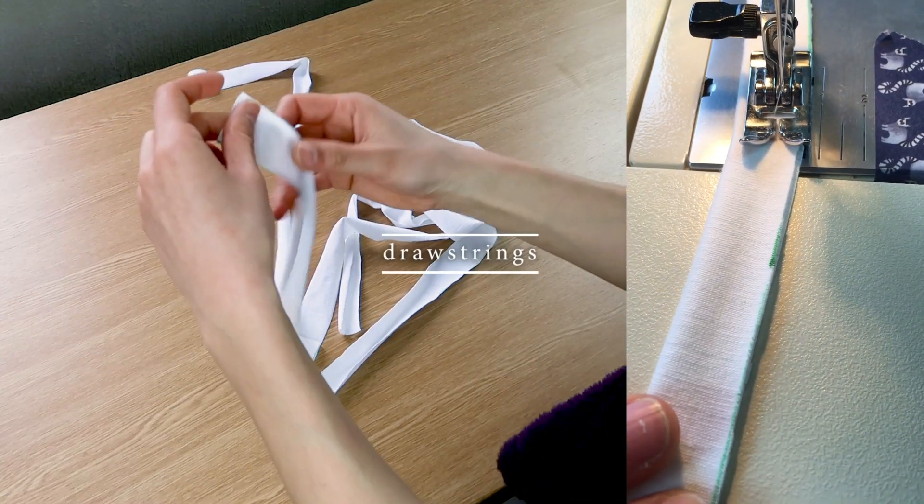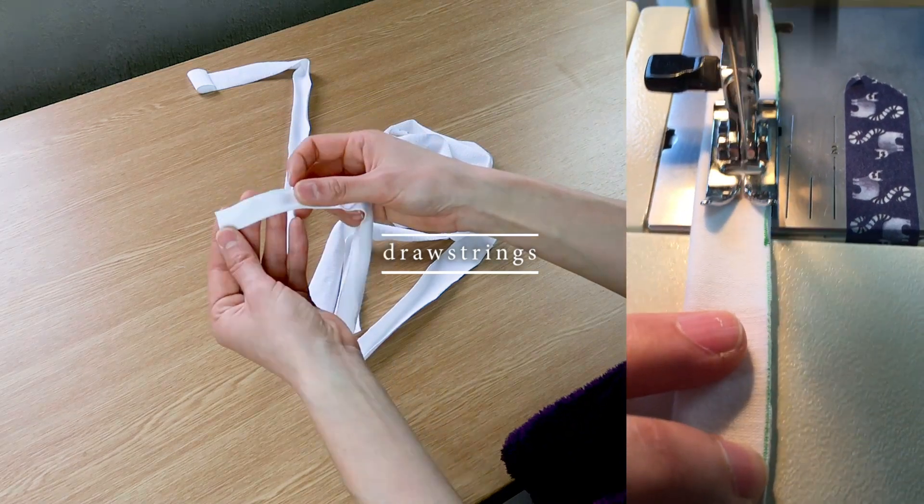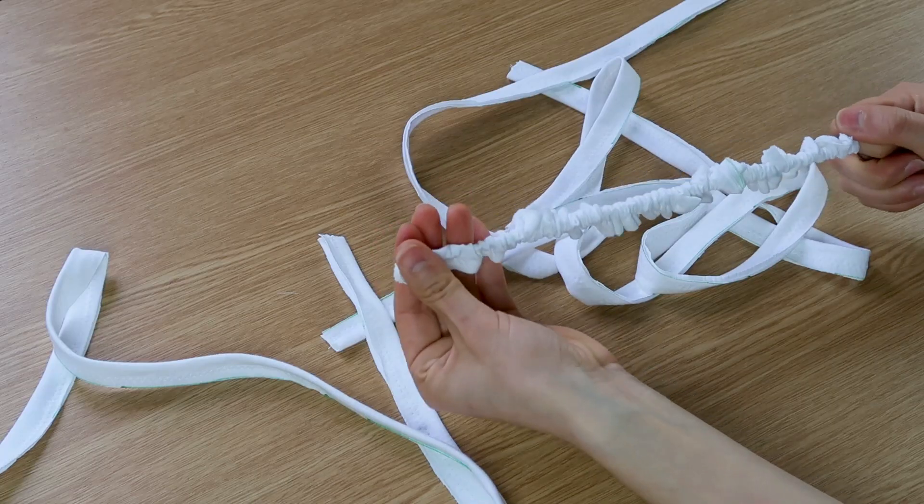Time to make the drawstrings, I fold them right sides together and I sew with the zigzag. I turn inside out.